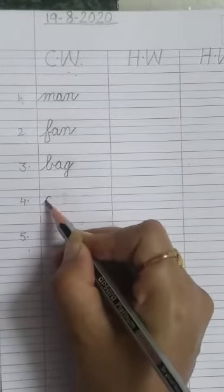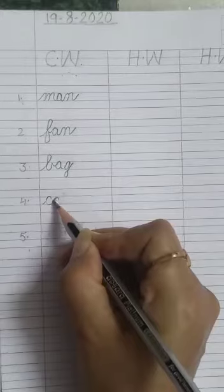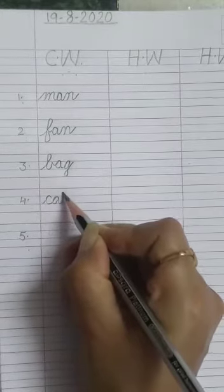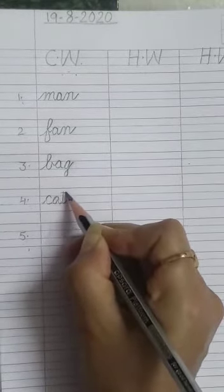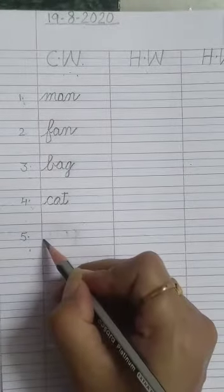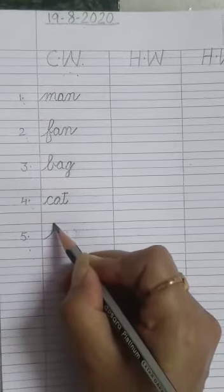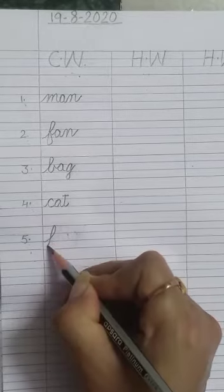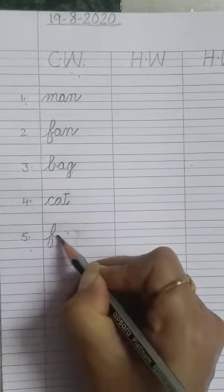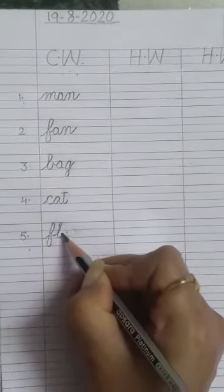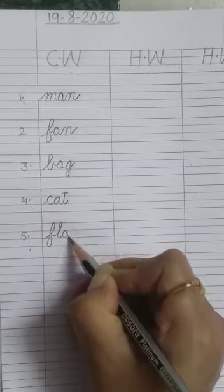Our next word is cat and the spelling of cat is C-A-T, cat. And the last word is flag and the spelling of flag is F-L-A-G, flag.